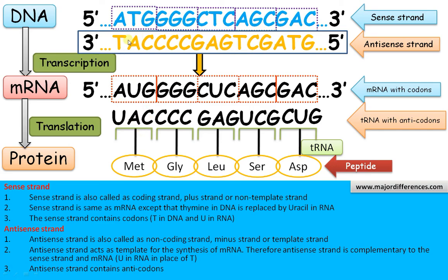Here it is TAC, and in the mRNA the corresponding anticodon is UAC. In the case of DNA, uracil is replaced by thymine — rest is the same: CCC, GAG, and so on. So the antisense strand and the anticodons both have the same nitrogenous bases. Therefore the antisense strand contains anticodons. In summary, the sense strand is the same as the mRNA molecule, whereas the antisense strand serves as a template for the synthesis of the mRNA molecule, which is similar to the anticodons except that thymine is replaced by uracil in RNA.